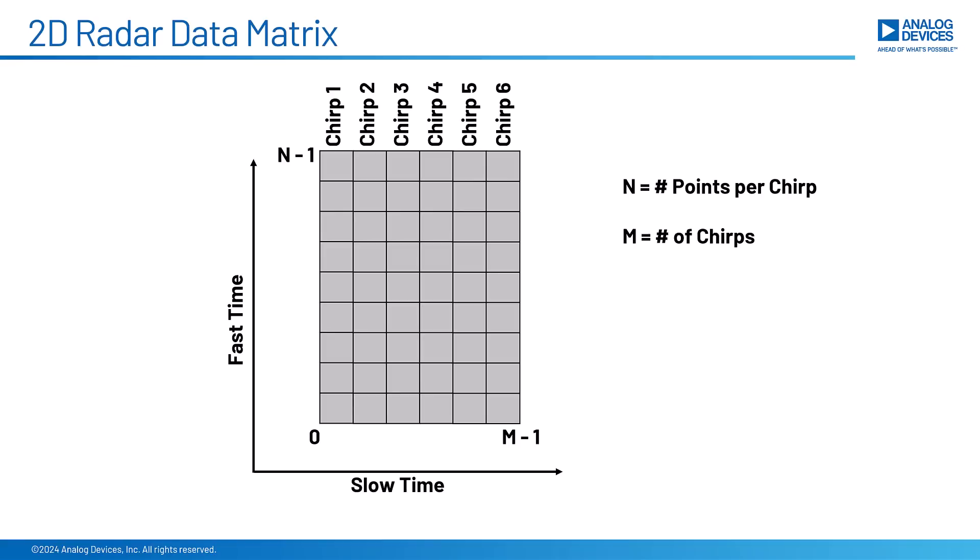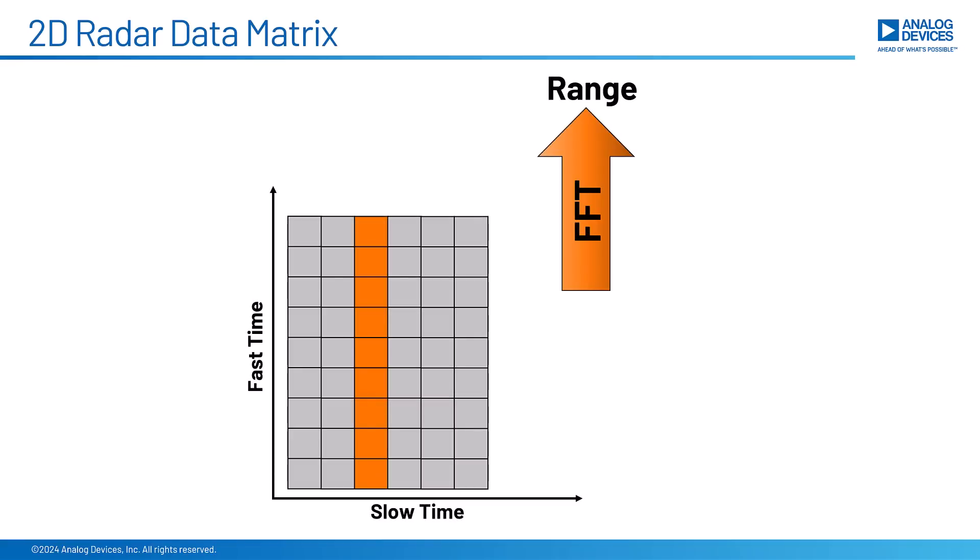Okay, so now we have this 2D matrix of our chirp data. And we've seen in past videos that if we do an FFT on one chirp of data, we will get the range. So that is still true. We can do an FFT on any of these columns and we will get range. So none of that has changed. So doing that for all of the columns now gives us range on the y-axis and slow time on the x-axis.